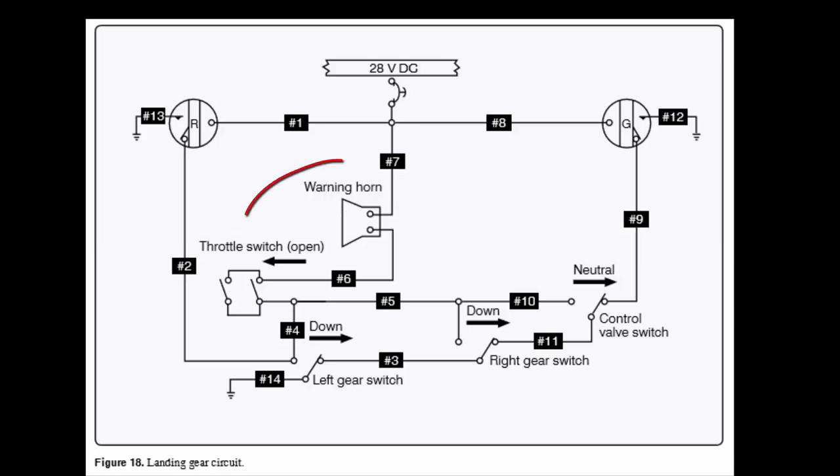So let's look at the warning horn. The warning horn is supplied 28 volts DC all the time straight down from the bus bar through wire 7. The other side of the horn is seeking a ground. That's what will make it sound. So they're saying, what would make it sound but won't if it's broke? So the bottom pin is seeking a ground.